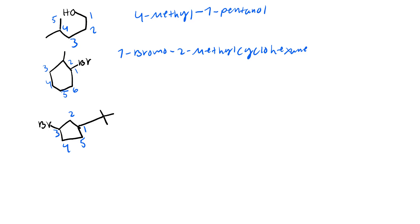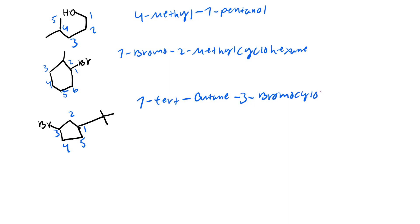Going upwards gives 3-bromo, going downwards gives 4-bromo - it's better to go upwards. Maybe you can do this in different colors on your exam to figure out which path is better. We have a 1-tert-butyl. We do not use tert for alphabetical ordering - anything with a dash we don't use. So we ignore tert and use butyl. Then 3-bromo. We don't have anything else, so: cyclopentane. It's 1-tert-butyl-3-bromo-cyclopentane.